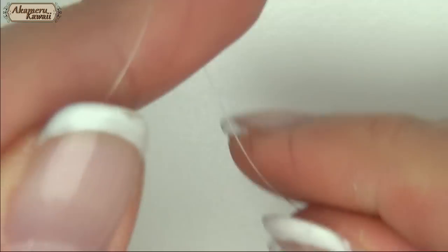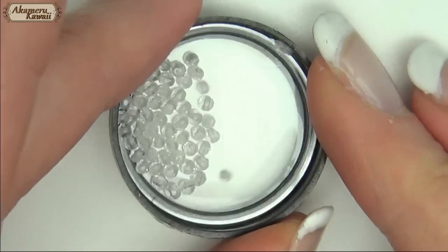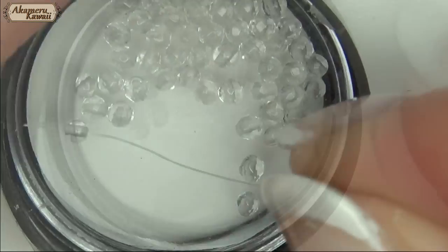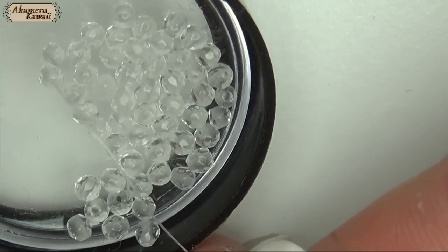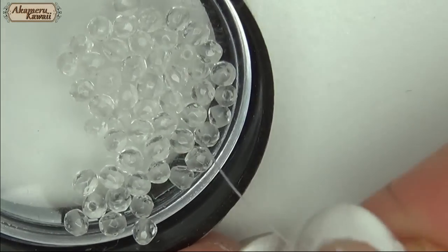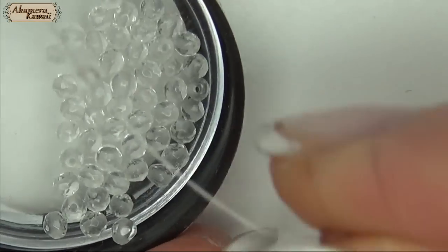To make necklaces, I use some beading wire, but you can use any thread you have. Then you need some beads or gemstones to thread on. I also make real life jewelry sometimes, so I have gemstones to use, but you can use whatever you want. I'm using faceted quartz for this one.